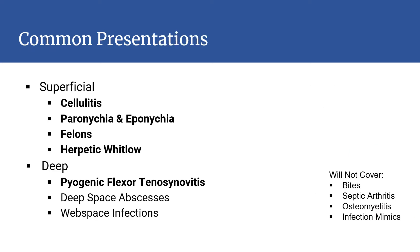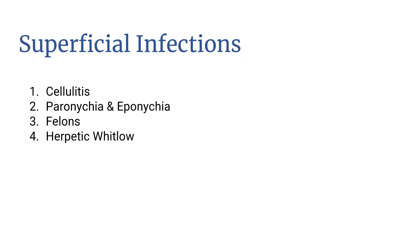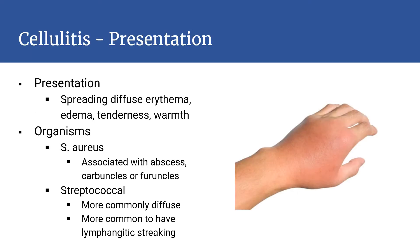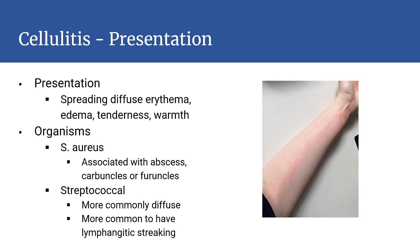Acute hand infections can be grouped broadly into two categories: superficial and deep. Cellulitis is a non-necrotizing inflammation of the skin and subcutaneous tissues. It presents as spreading diffuse erythema, edema, tenderness, and warmth, and is often accompanied by acute lymphangitis. The main pathogens are Staph aureus and Streptococcus.